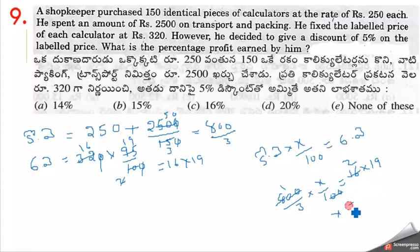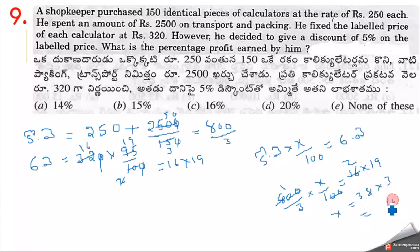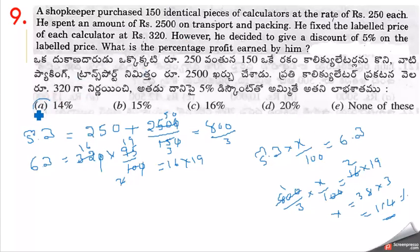The cost price total is 150 into 250 plus 2500. Selling price per unit after 5% discount on 320 is 304. Total selling price is 150 into 304. Working through: x equals 19 to 38. 38 into 3 equals 114. So profit percentage is 114% minus 100% equals 14% profit.